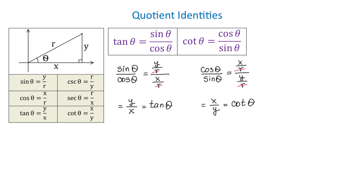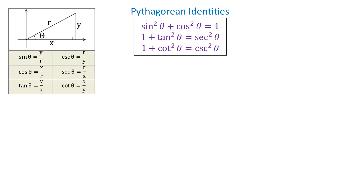Now let's talk about the Pythagorean identities. We have three of them. The first one is sine squared of theta plus cosine squared of theta equals 1. The second one is 1 plus tangent squared of theta equals secant squared of theta. And the third is 1 plus cotangent squared of theta equals cosecant squared of theta.